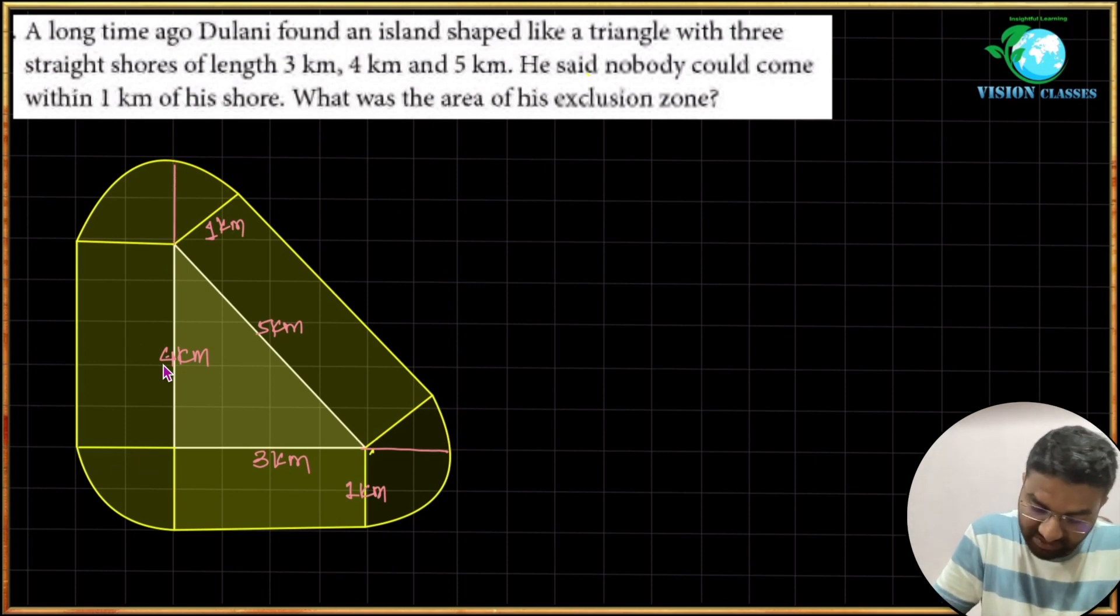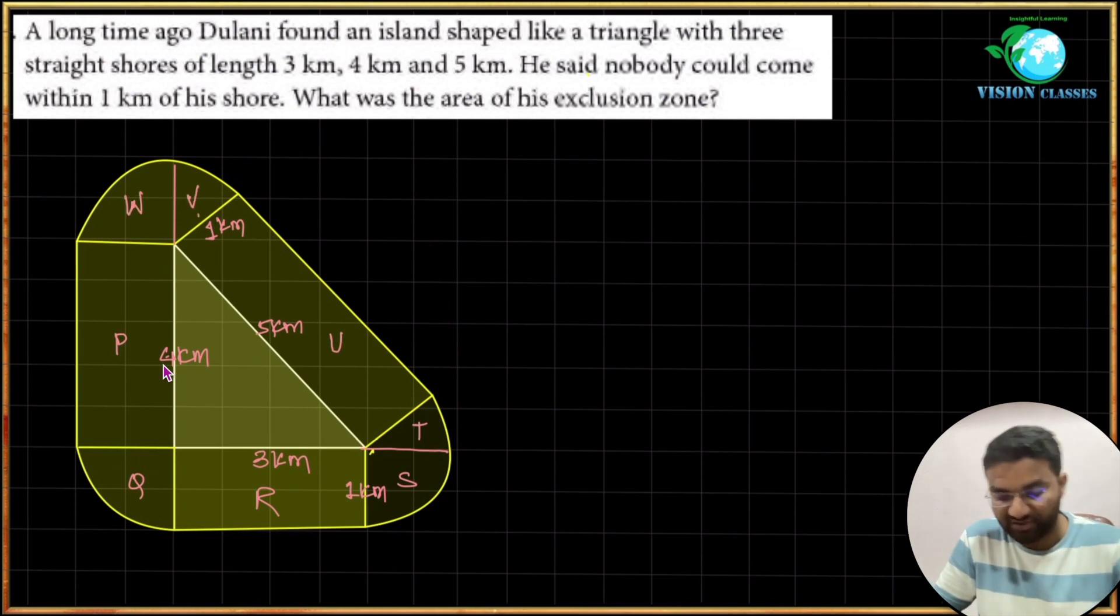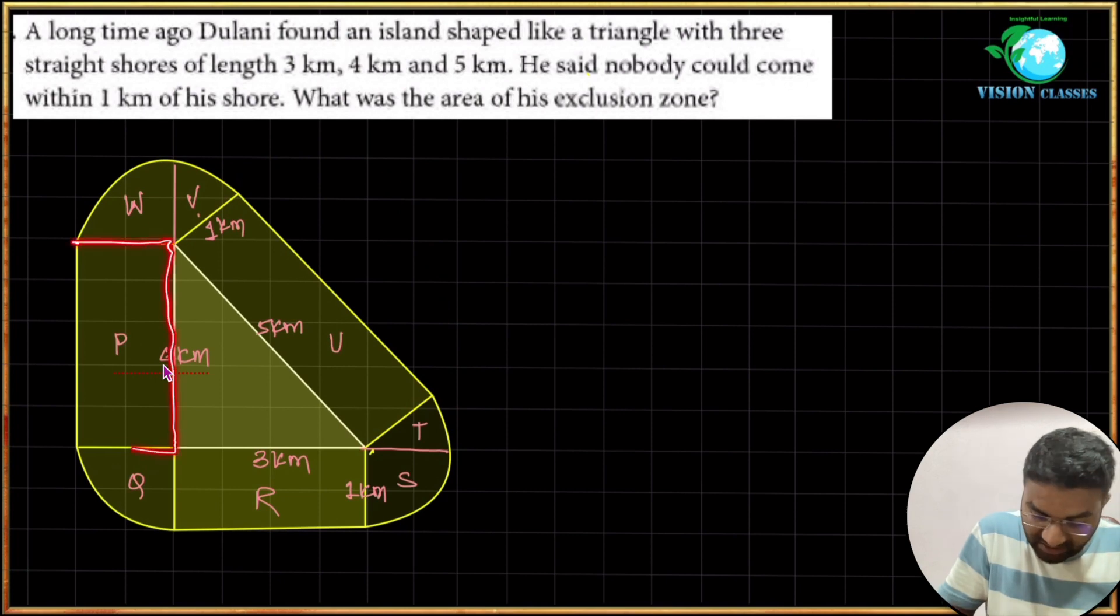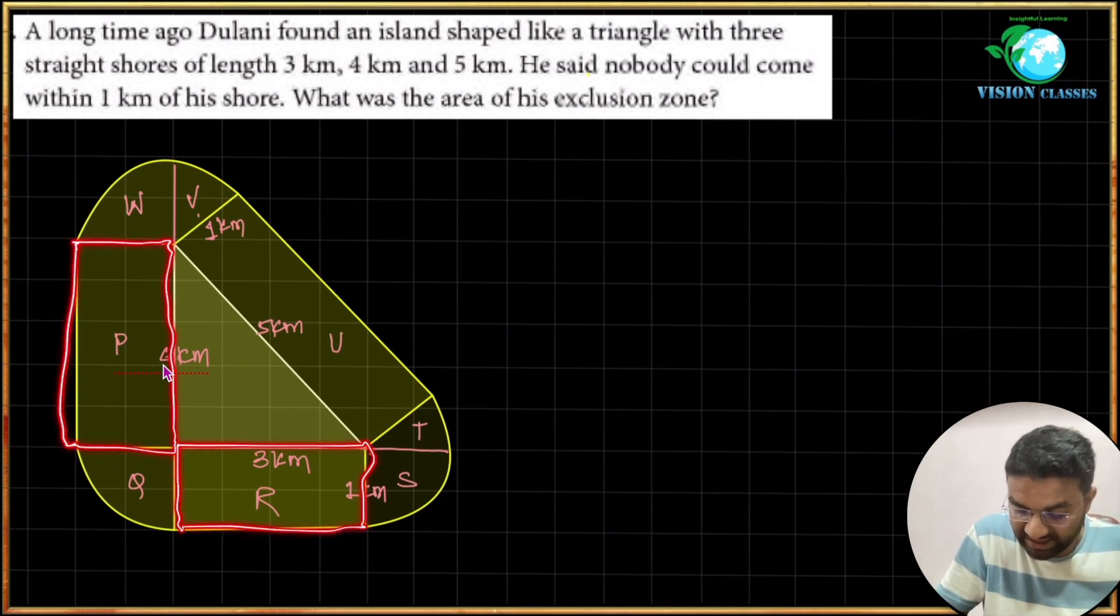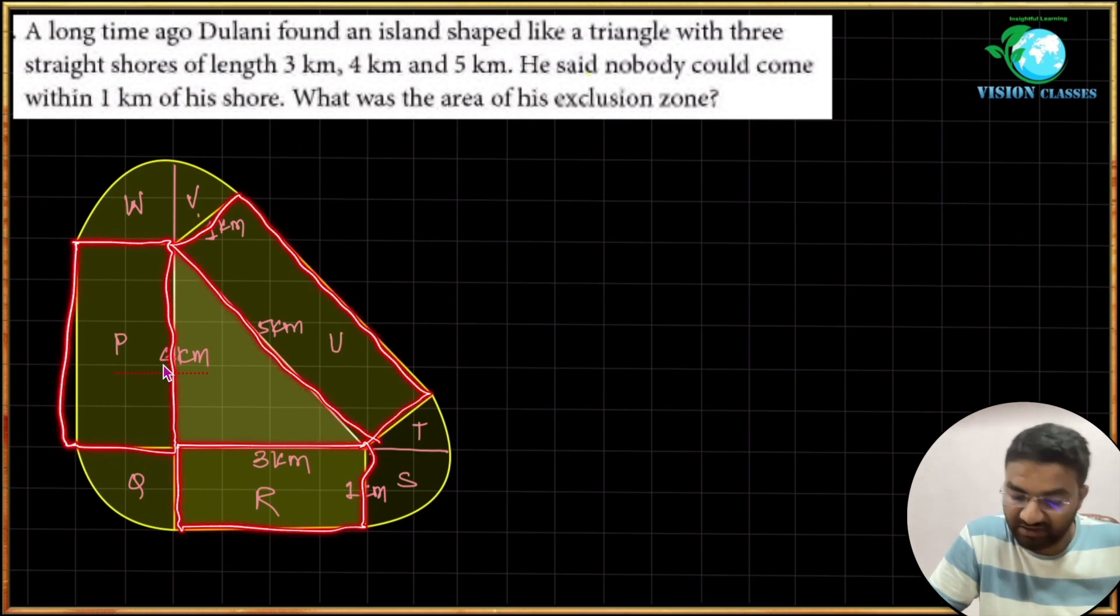Here we will start from this one: P, then Q, R, S, T, U, V, and W. Okay, so if you look at it here, this one P is a rectangle, Q is a rectangle, R is rectangle, and U is also a rectangle.